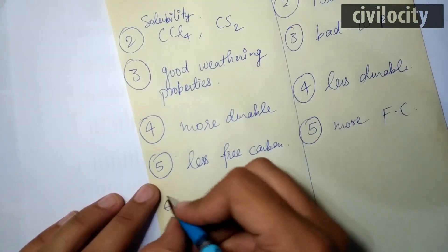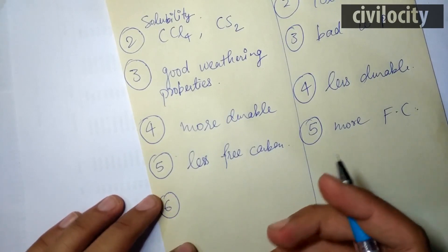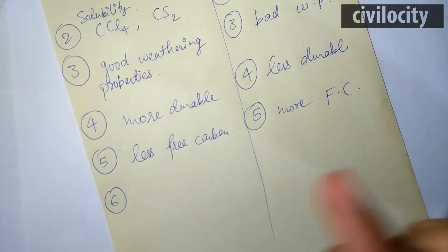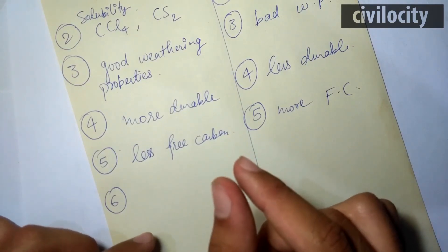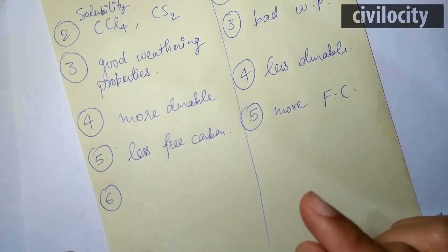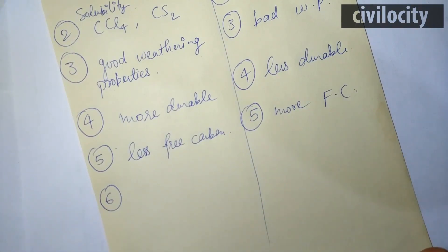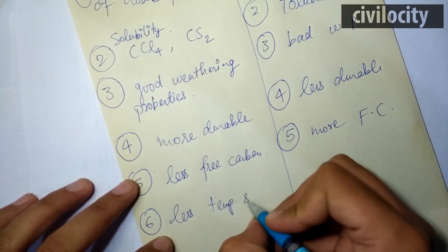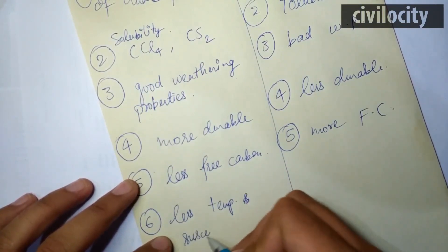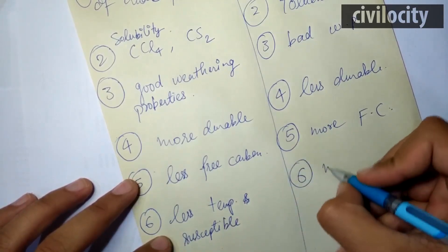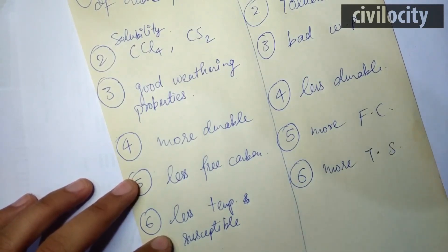The sixth point is temperature susceptibility. Susceptibility means that a small change in temperature shows a very large or small change in properties. Less temperature susceptible means a large temperature change shows very small change in properties; more temperature susceptible means a small temperature change shows a very large variation. Bitumen is less temperature susceptible, whereas tars are more temperature susceptible.